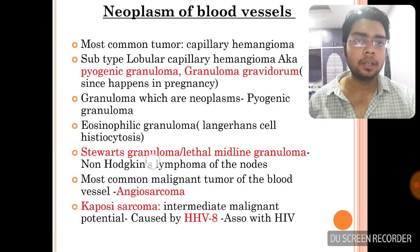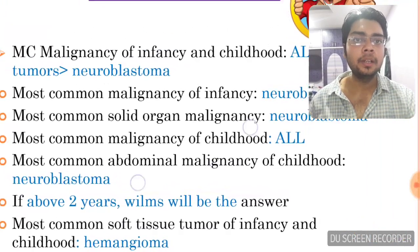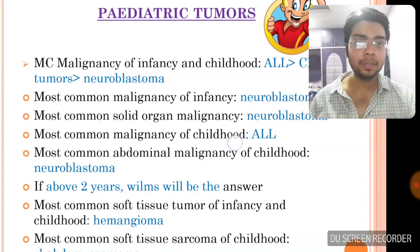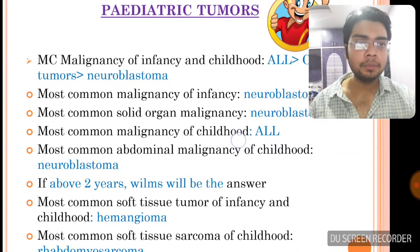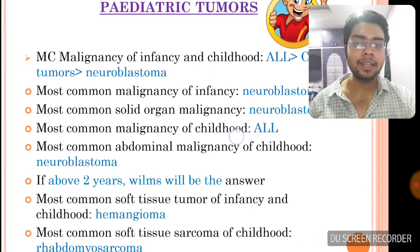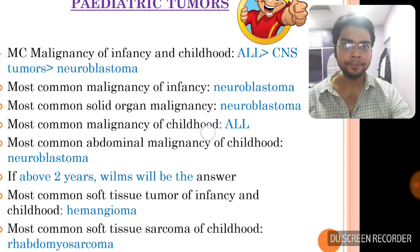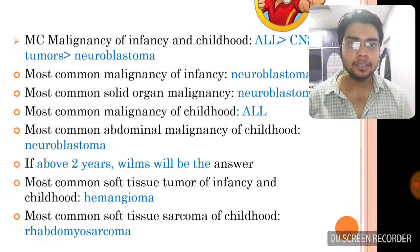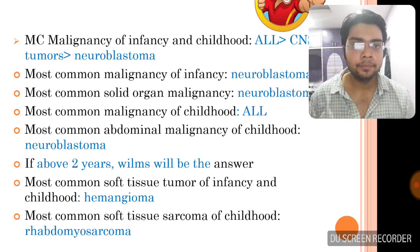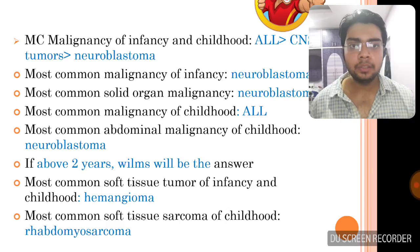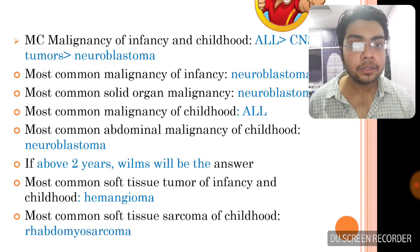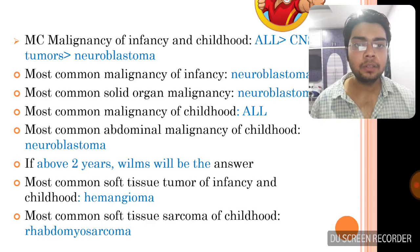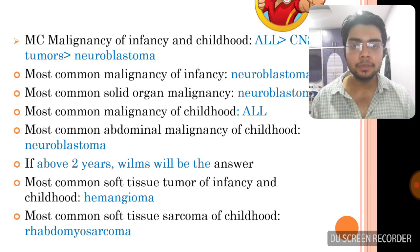Moving to pediatric tumors: the most common malignancy of infancy and childhood is ALL, followed by CNS tumors, then neuroblastoma. However, if restricted to infancy alone, it is neuroblastoma. The most common solid organ malignancy is neuroblastoma, but the most common malignancy of childhood overall is ALL. The most common abdominal malignancy of childhood is neuroblastoma, but for children above 2 years it is Wilms tumor.